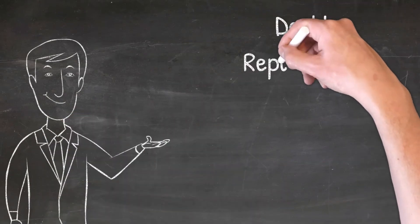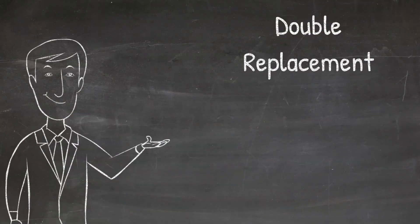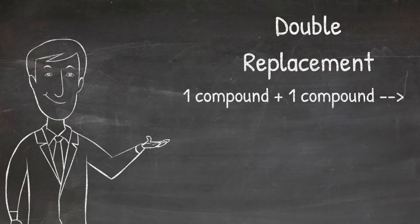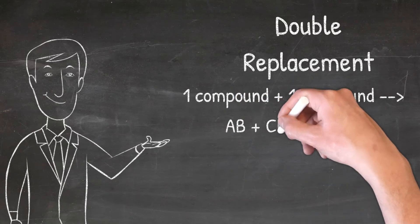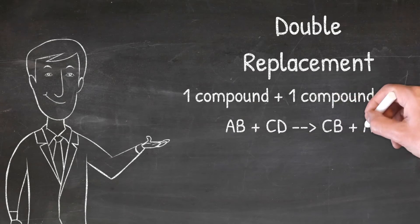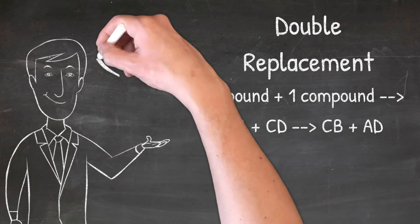The last reaction is double replacement. Double replacement reactions are reactions where you have one compound plus another compound. In these reactions, two elements in two different ionic compounds are going to be replaced. Double means two, so it is easy to remember that two things are being replaced or trading places. The generic equation for a double replacement reaction is AB plus CD yields CB plus AD, where the elements A and C are trading places. Now write this down.